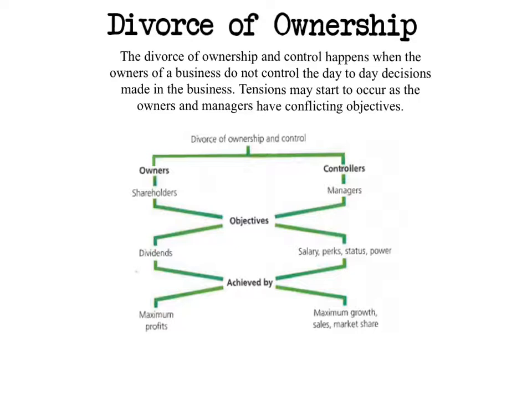The owner of the sole trader is also the manager, but when we start thinking about much larger companies — for example public limited companies — the managers are not actually the owners of the business. Especially when we consider majority shareholders, they might be considered to be the owners but they've appointed managers to manage the business on their behalf. Divorce of ownership looks at whether tensions might start to occur as the owners and the managers have conflicting objectives.